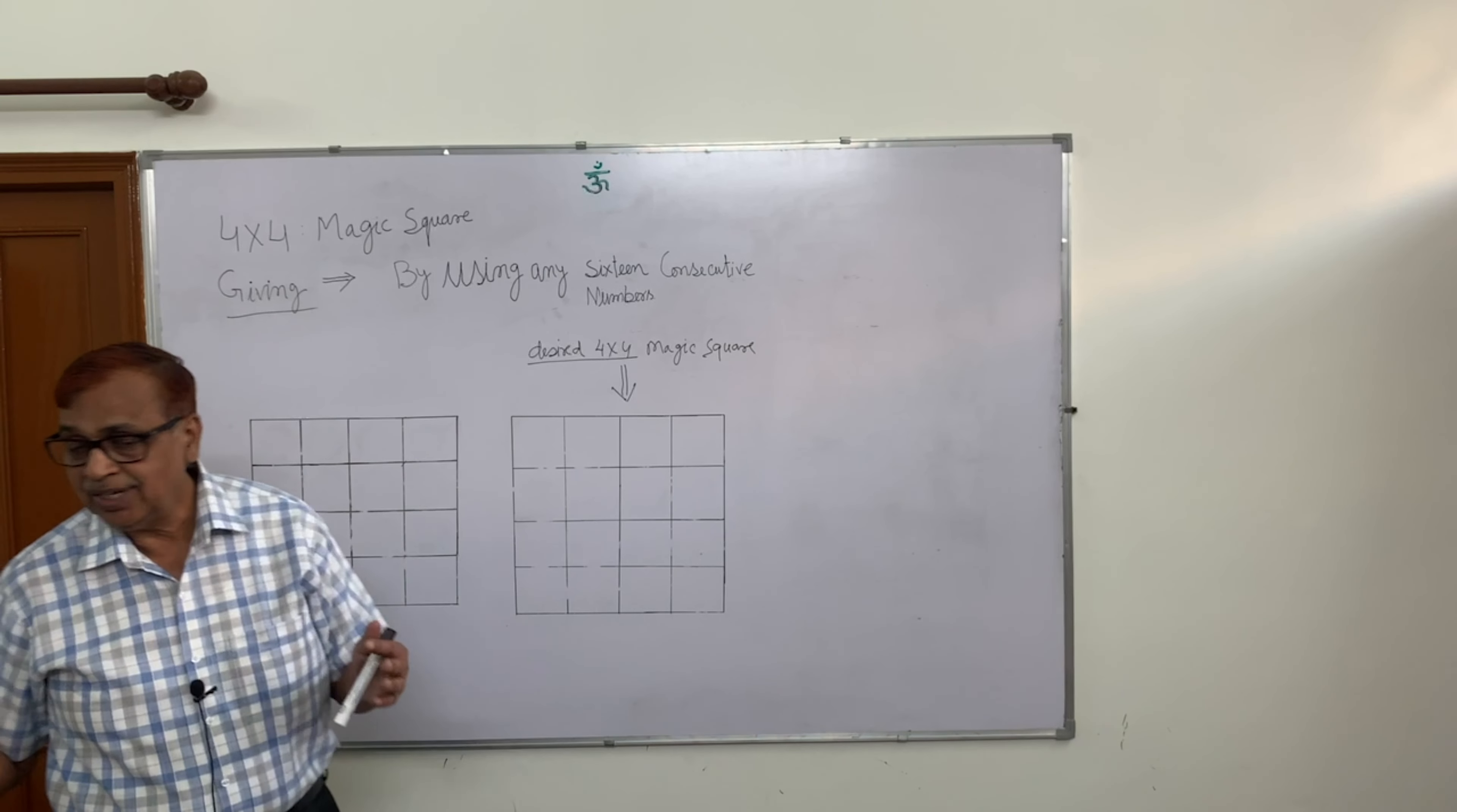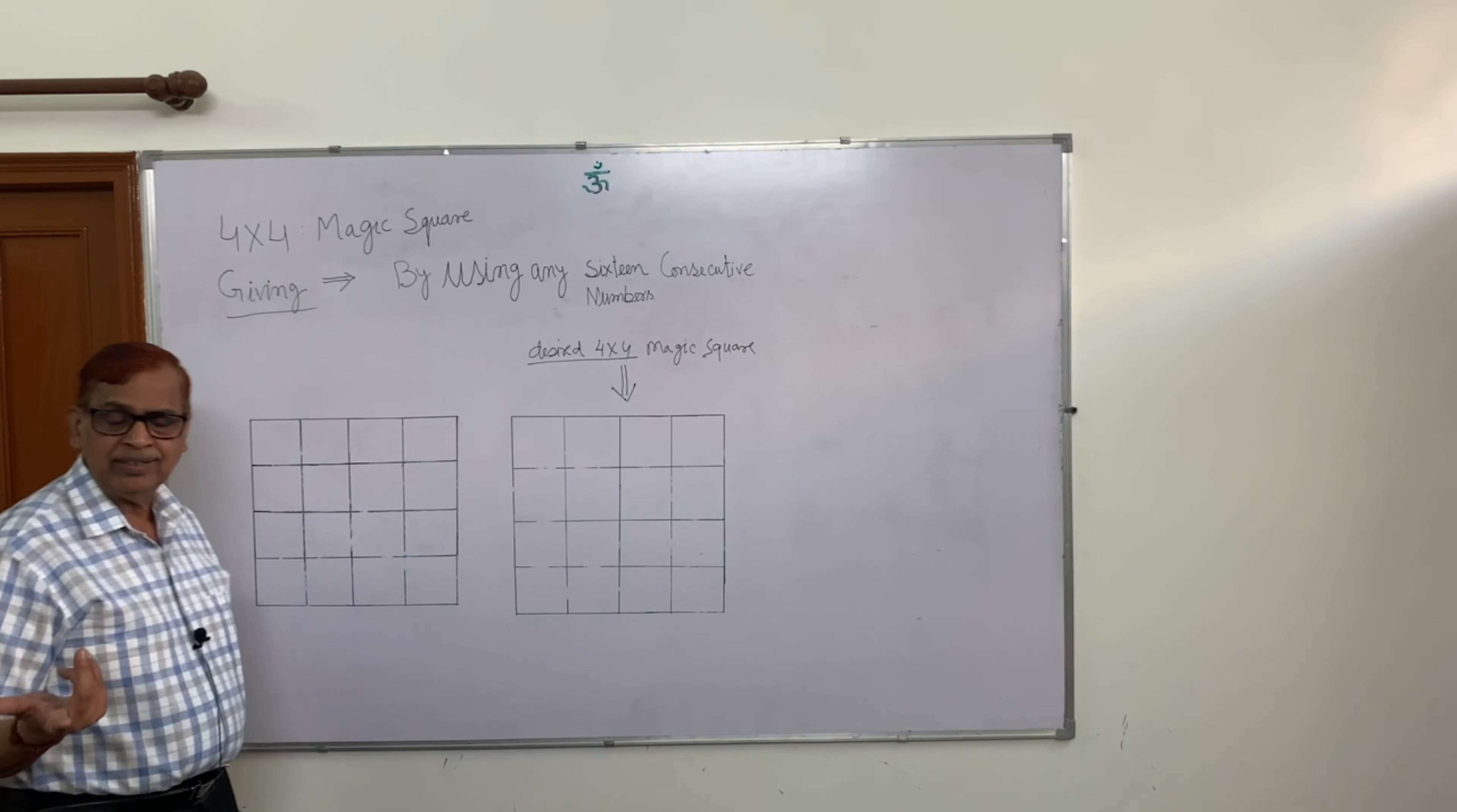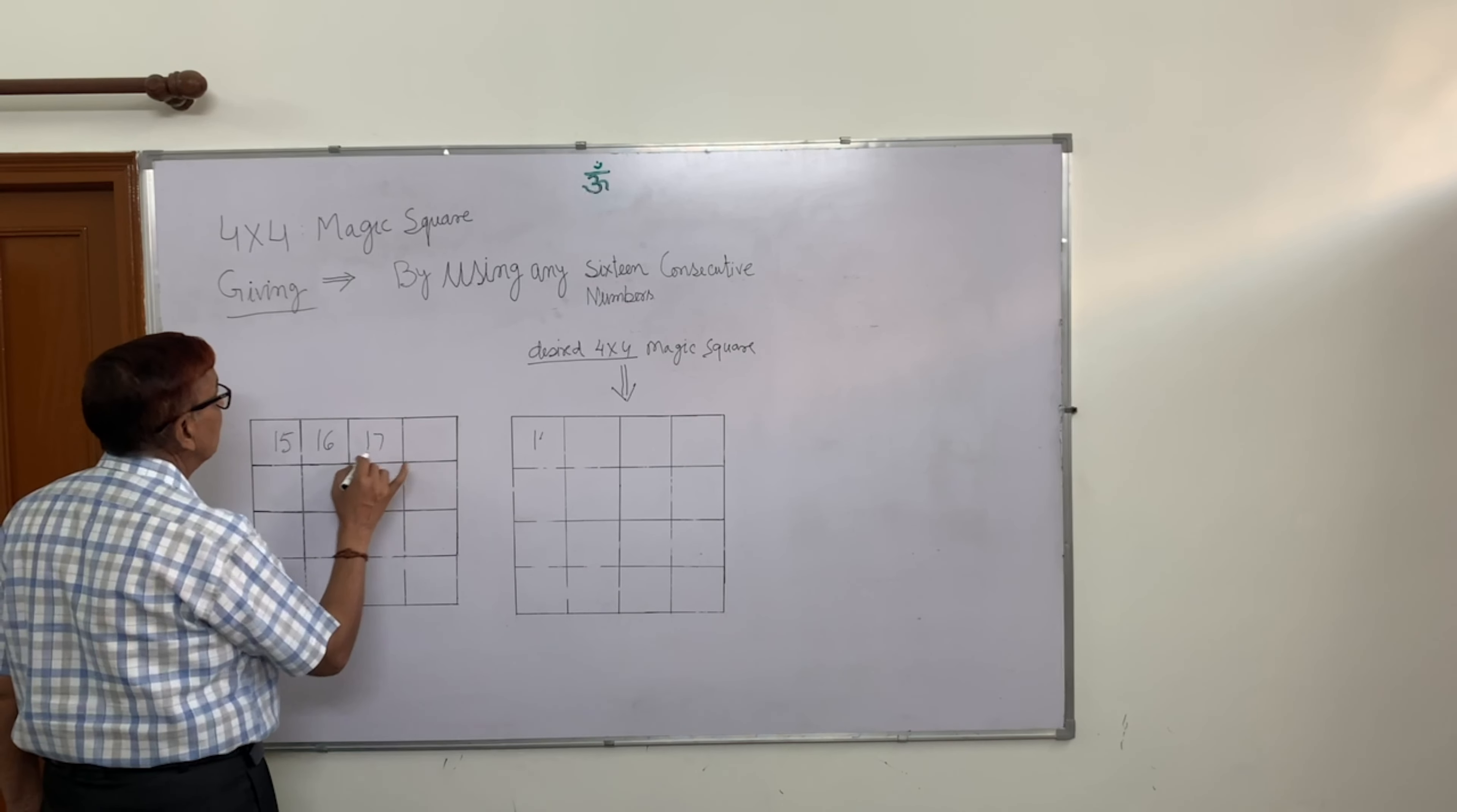Where do you start? I will tell you where I start the 16 consecutive numbers. Tell me where to start from. Take a big number, we don't have any difficulty. What did you get? 15. I got 15. I can write 15 here. 15, 16, 17, start with 15.